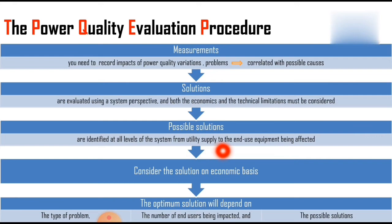The possible solutions are identified at all levels of the system, from utilities down to the end user equipment being affected. You then consider the solution on an economic basis, and from that consideration you choose the best optimum solution, which depends upon the type of problem, the number of end users being impacted, and the possible solutions available.